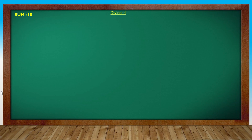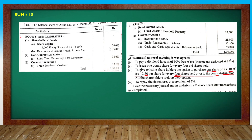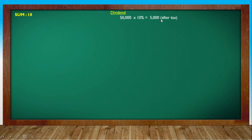Before writing entries, some calculations are necessary. How much dividend will be paid and how much tax provision will need to be made? Currently ₹50,000 is the paid-up capital, on which we have to give 10% dividend. Dividend will be given on the paid-up capital as it stands. If you declare the dividend, you will have a 10% rate after tax.